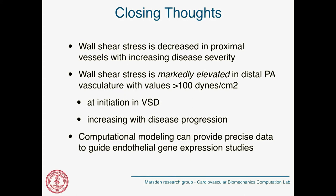In summary, our data agrees with prior data that wall shear stress is decreased in the proximal vessels with increasing disease severity, but we believe it is markedly elevated in the distal PA vasculature with values upwards of 100 dynes per cm². This likely has implications for initiation of PH — for example in congenital heart disease patients — and these values increase even more with disease severity in patients with progressively worsening PH. Computational modeling can provide more precise data to guide targeted endothelial gene expression studies.